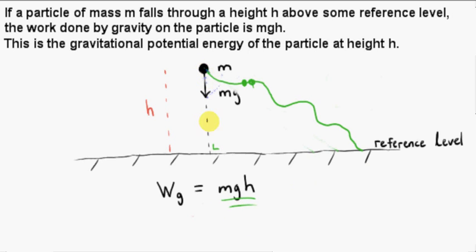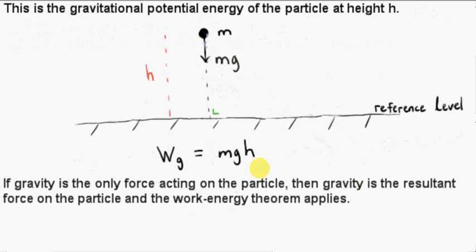So all we need is the vertical distance through which the particle moves. So if the vertical distance is h, the work done by gravity is mgh. Now, here is an interesting result.